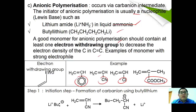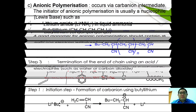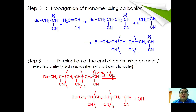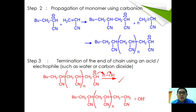The initial step of anionic polymerization is similar to cationic polymerization: butyllithium first attacks the C=C and carries out electron transfer, forming a carbanion. The carbanion further propagates to many acrylonitrile monomers. The reaction is terminated by using an acid or electrophile such as water or carbon dioxide.